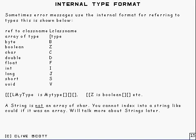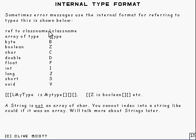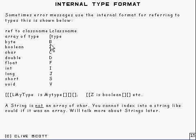There is an internal format which is used in class files to refer to types, and sometimes error messages pop up that use this internal format — here is how to interpret it. If you see a capital L followed by something, that refers to the class name that follows it. If you see a left square bracket, that means it's an array of that particular type. The rest is straightforward: B for byte, Z for boolean, C for char, and so on.